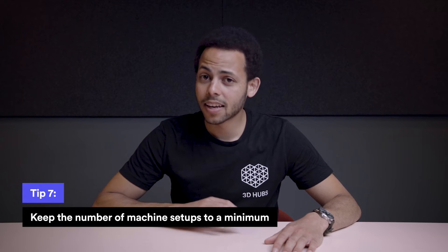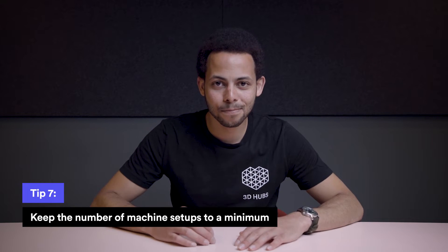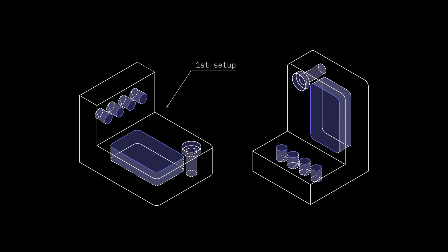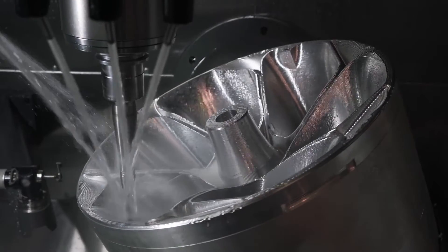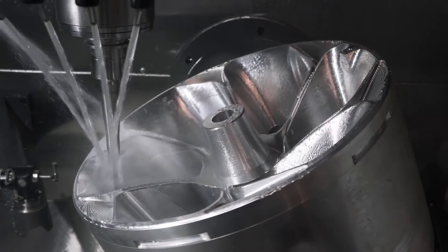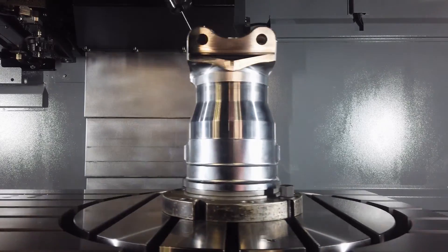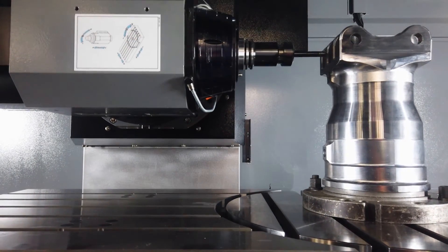Tip seven: keep the number of machine setups to a minimum. Design parts that can be machined in as few setups as possible, preferably only one. Repositioning a part adds to the cost as it will usually need to be done manually. For complicated geometries, this is even more important, as they may require a multi-axis CNC system, further increasing the price. Consider splitting the part into geometries that can be machined in one setup and then bolted or welded together.